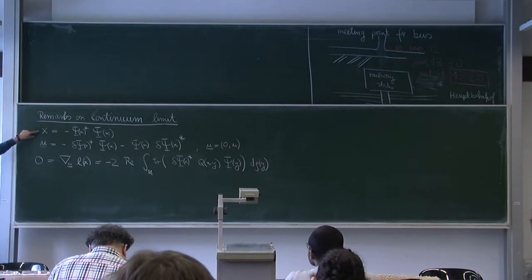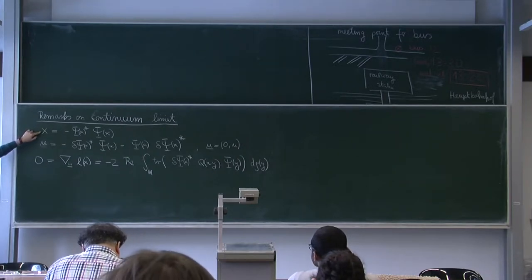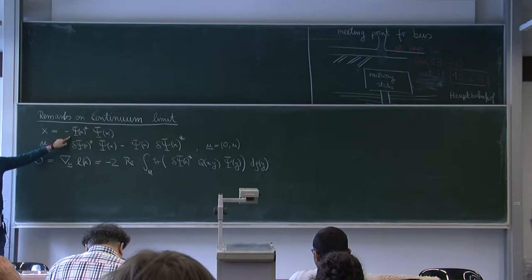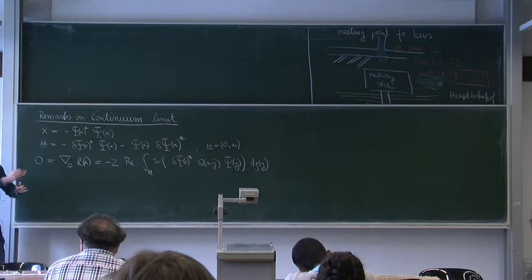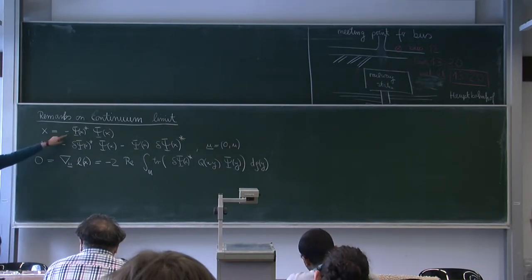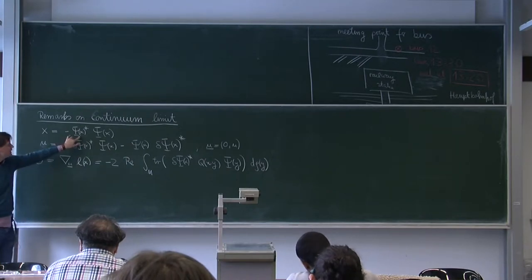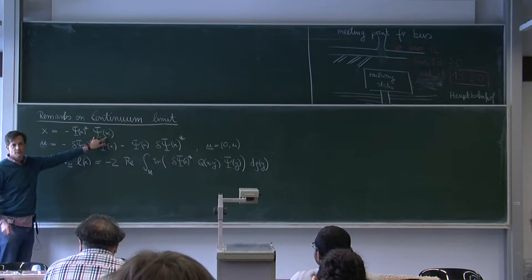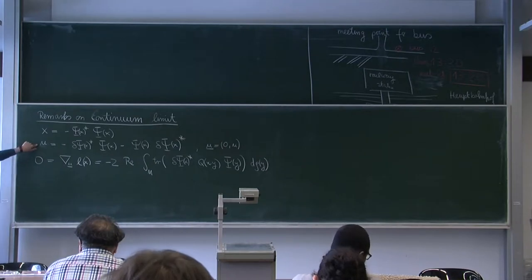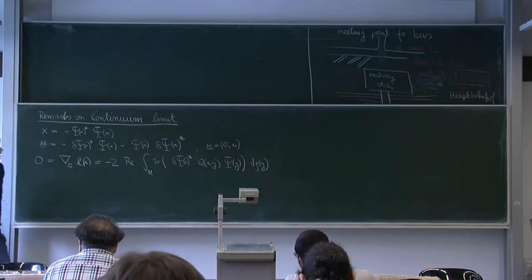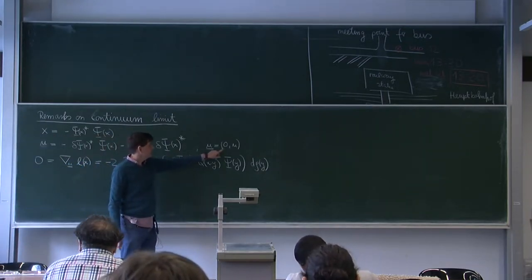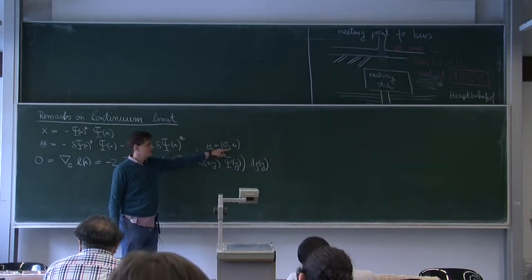Recall yesterday we had this wave evaluation operator, and then the operator x, so our space-time point of the causal fermion system could be represented like this. Vector fields on F — meaning first-order variations of space-time points — could then be realized by varying this wave evaluation operator, which is what we called variations of physical wave functions. The first-order variations of our vector field are given by taking a first-order perturbation of this, and you get a corresponding JET by setting the scalar component to zero.